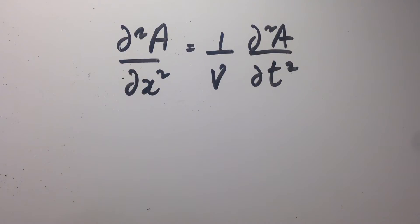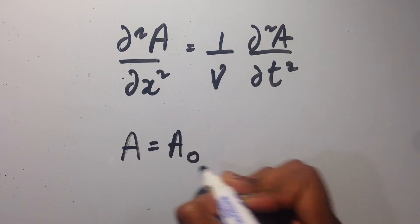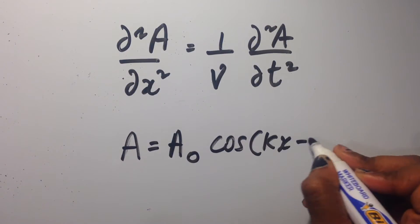Let's start with the general plane wave equation and solution. Our general solution will be A equals A naught cos(kx minus omega t).